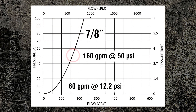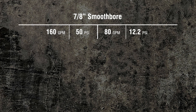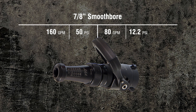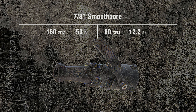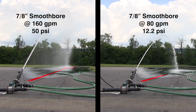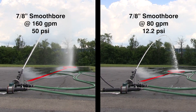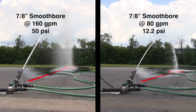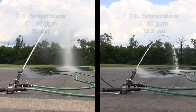This flow versus nozzle pressure curve summarizes the complete range of a 7/8-inch smoothbore. So remember: if the flow is divided in half with a smoothbore nozzle, the nozzle pressure is reduced by a lot more — it divides the nozzle pressure by 4. At about 12 PSI, not only do you have reduced flow, but you may not be able to reach the seat of the fire.